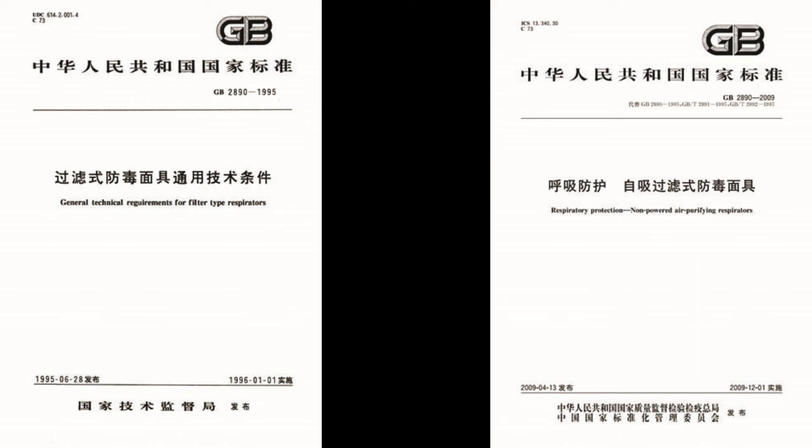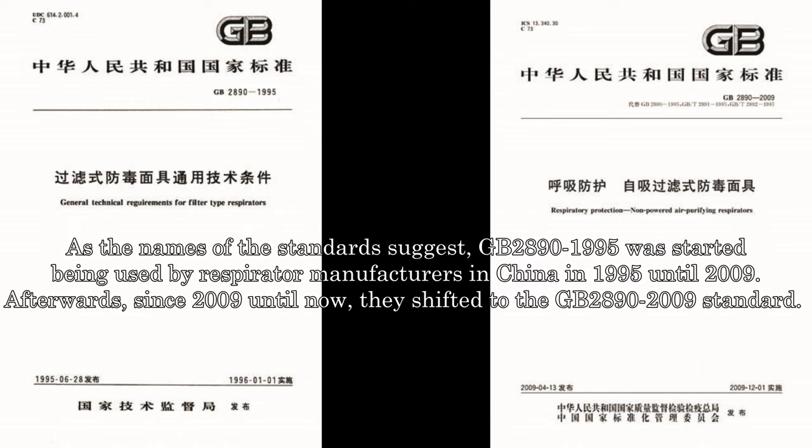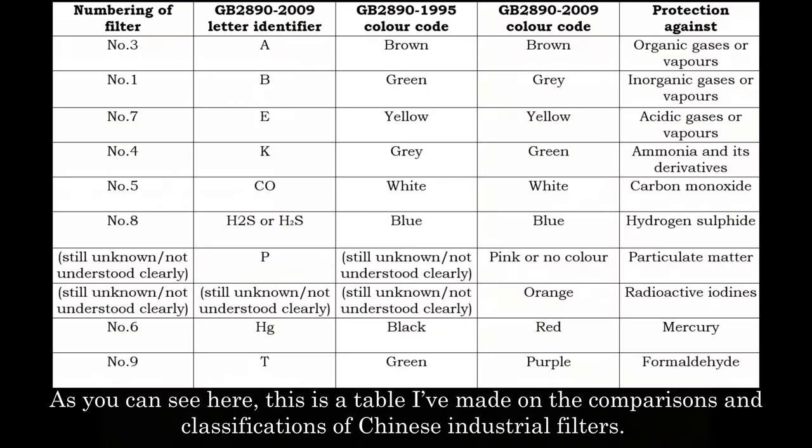This brings us to the next explanation about publicly known standards. There are two known standards for Chinese respirators: GB2890-1995 and GB2890-2009. As the name suggests, GB2890-1995 was used by respirator manufacturers in China from 1995 until 2009. Afterwards, since 2009 until now, they shifted to the GB2890-2009 standard.